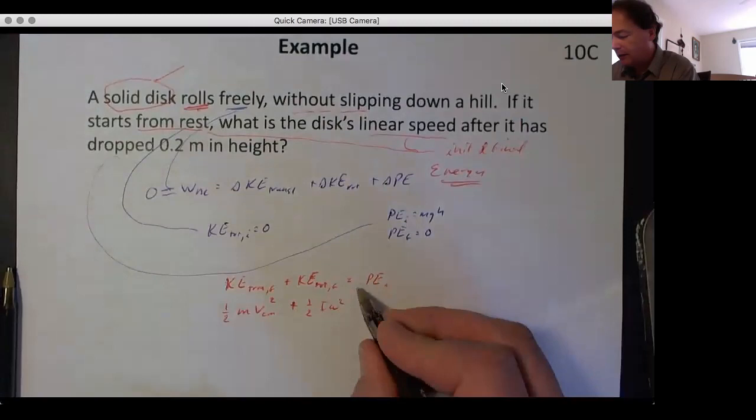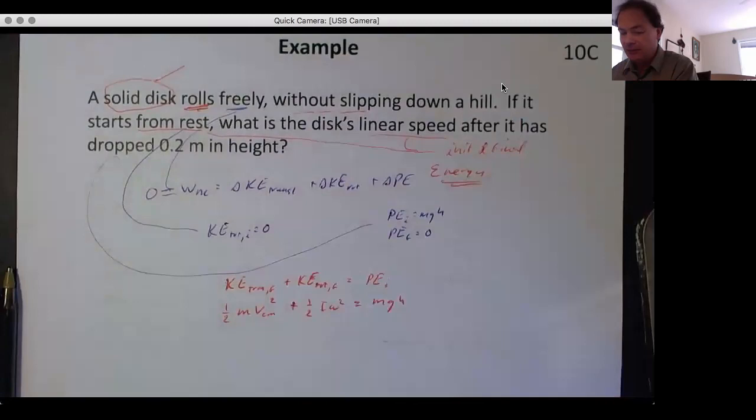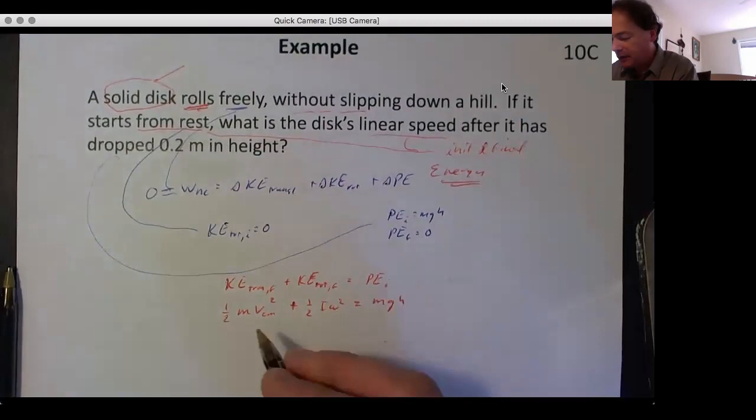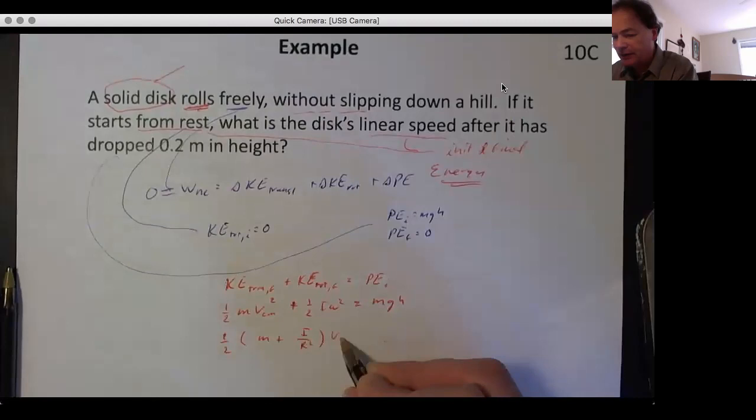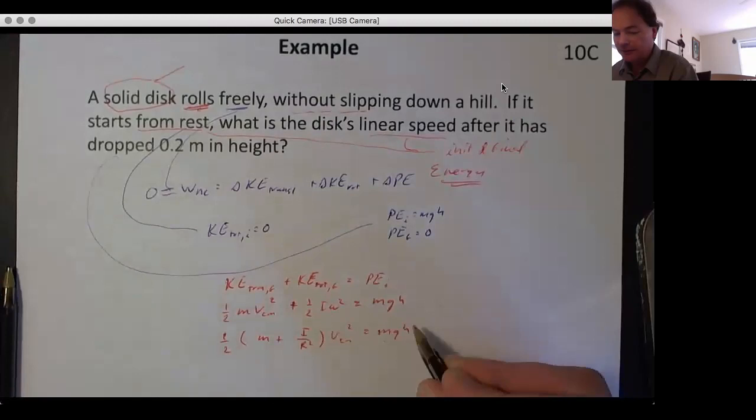Make the omega bringing in an R and get the v_cm squared. So this is ½m plus I/R² times v_cm² is equal to mgh.